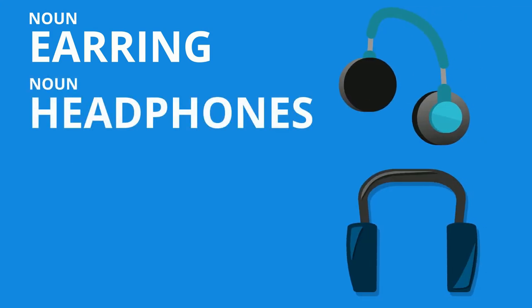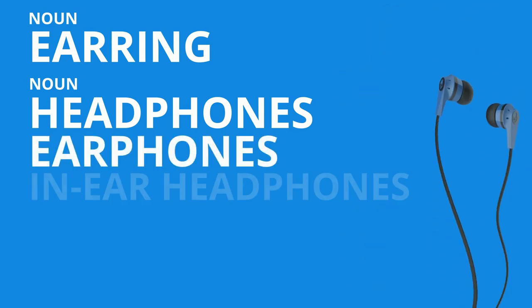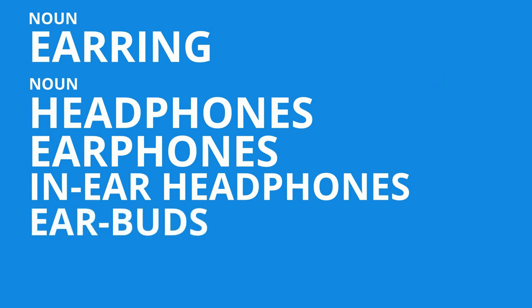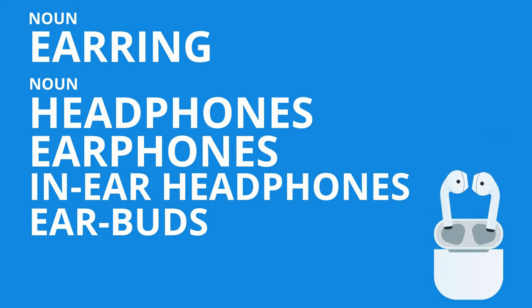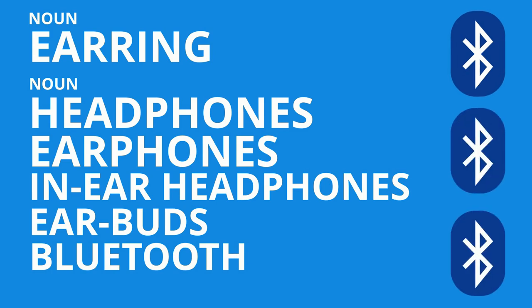Let's move on to a very different type of product relating to the ears: headphones. There is also a smaller version called earphones, which can sometimes be referred to as in-ear headphones. The latest innovation in headphones are earbuds. A lot of these products work with the technology called Bluetooth.